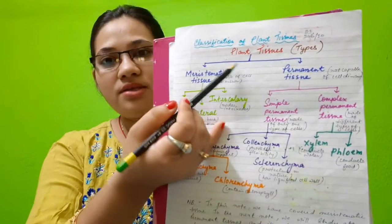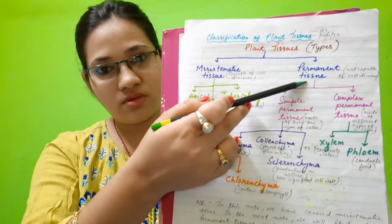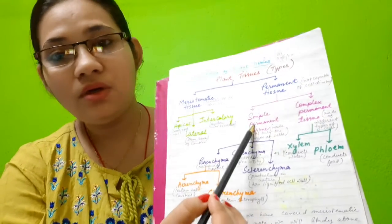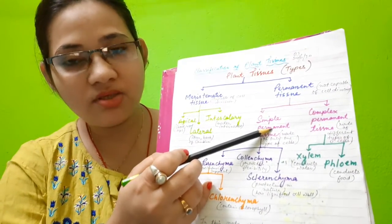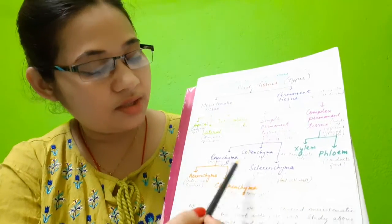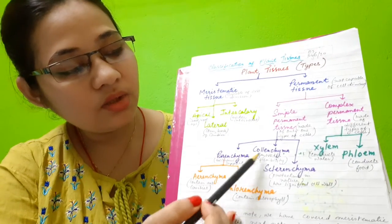Good morning everyone. Today we are going to study about plant tissues. We have already started plant tissues in our previous videos and notes. We have seen that plant tissues are basically of two types: meristematic and permanent tissues. We have completed meristematic tissues. Under permanent tissue, we have studied simple permanent tissue and complex permanent tissues, including parenchyma and collenchyma.